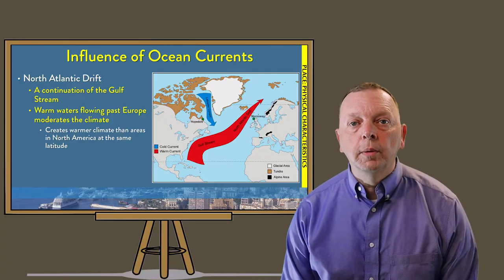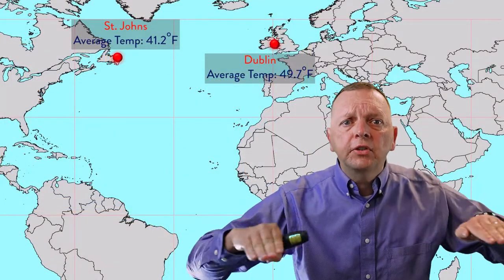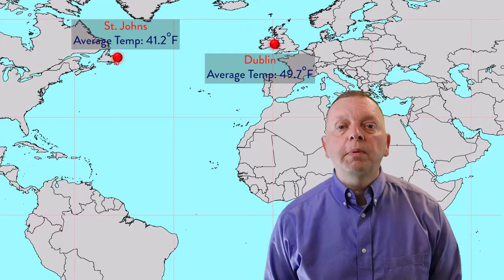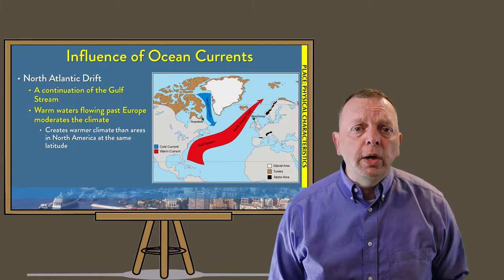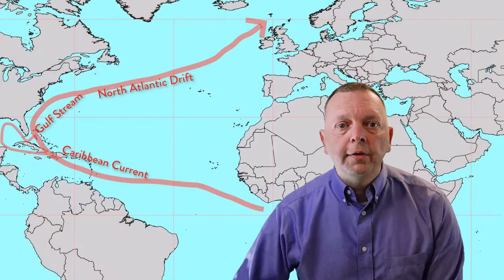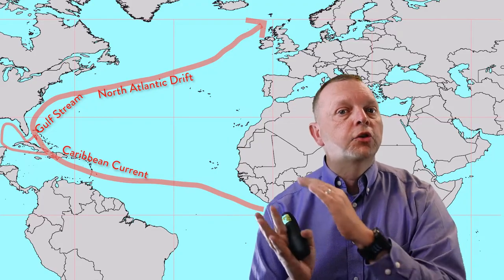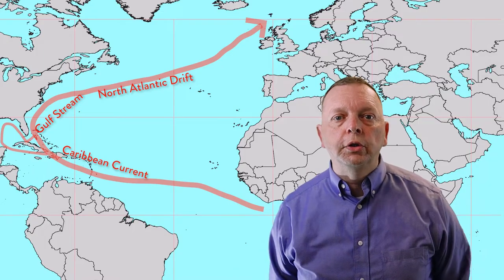One of the major factors of Europe's climate is the North Atlantic Drift. If you look at the latitude of most of Europe, it's about the same latitude as Canada, but Europe's weather is much warmer. The reason is the North Atlantic Drift, which is a continuation of the warm waters from the Gulf Stream that come along the eastern coast of the United States and then drift across the North Atlantic.